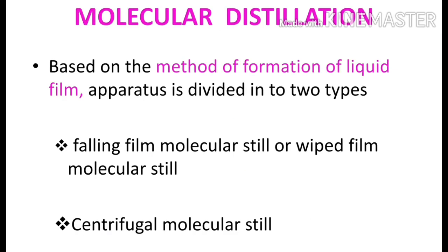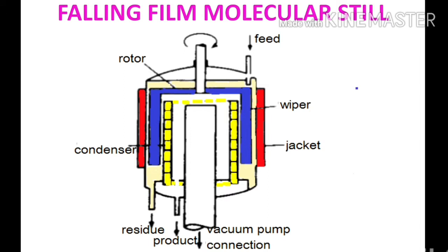Based on the method of formation of liquid film, the apparatus is divided into two types. The first one is falling film molecular still, otherwise known as wiped film molecular still. The second one is centrifugal molecular still.